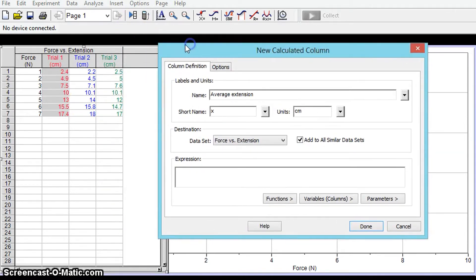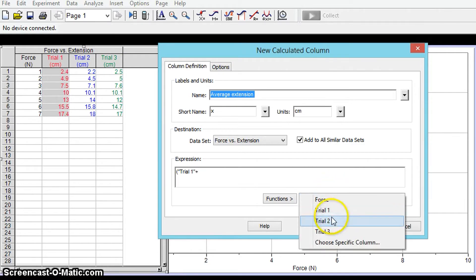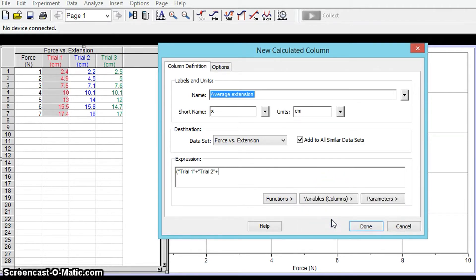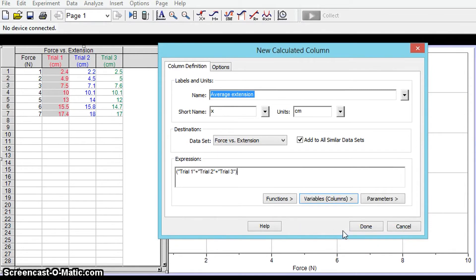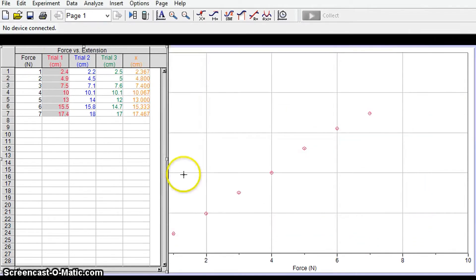What I need to do is I need to tell it to add the three columns together here and then divide by three. So I'm going to go to the variables columns trial one plus trial two plus trial three close the bracket and divide by three and we should have our average values here in this next column.